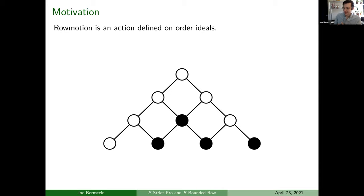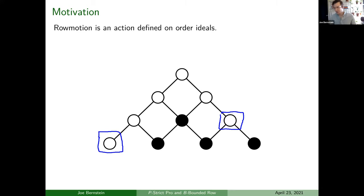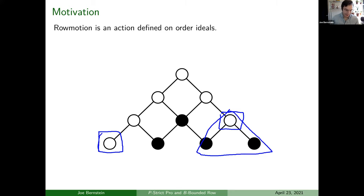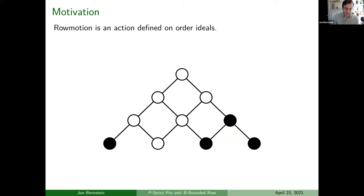Now how about another action: row motion. This one isn't defined on labelings of elements but instead on order ideals. The definition of row motion is: you look at the smallest elements that aren't filled in, where the black ones are the order ideal. Then you create a new order ideal based on those elements. Row motion says we get these elements and everything else will be nothing. An order ideal, of course, requires having everything beneath all the elements in your order ideal.